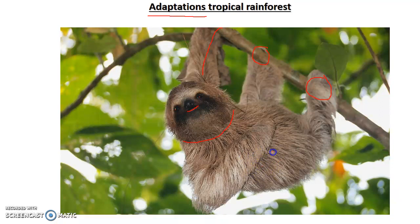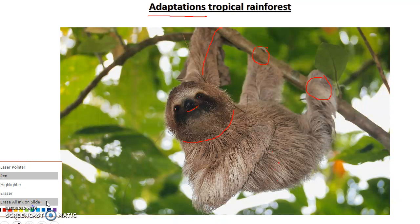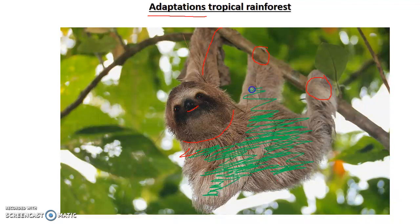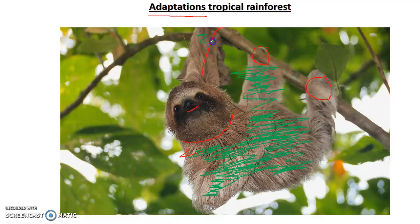Another adaptation — this might sound a bit gross — but algae actually grows on the back of a sloth. This means it blends in with the green tree environment, so it's hidden from predators. Because it's so slow and doesn't have a good reaction time, this camouflage gives it a better chance of survival. That's just one example of how animals adapt to live in the rainforest.